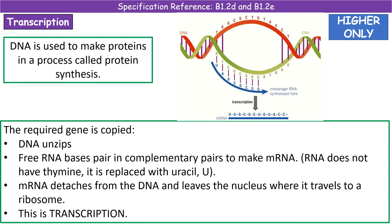For those of you doing higher tier, you are going to need to know about how we make proteins, or the process of protein synthesis. Protein synthesis is a two-stage process and we'll look at each stage in turn. First, we have transcription. What happens in transcription is the DNA in that particular gene unzips, meaning we've got exposed bases — those complementary base pairs have been broken apart and are now exposed. Free RNA bases are going to come in and pair up with their complementary base pairs.